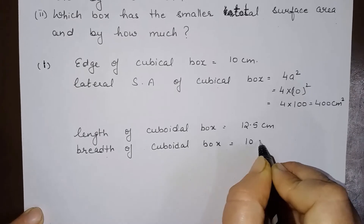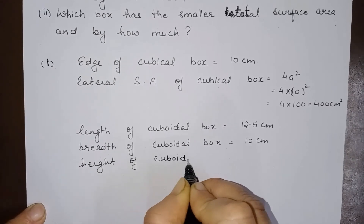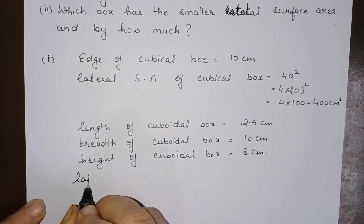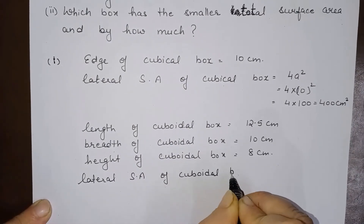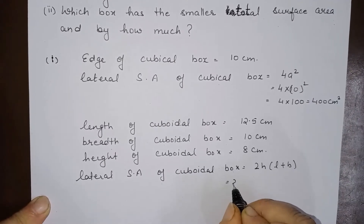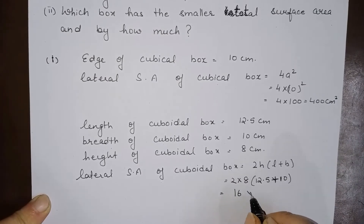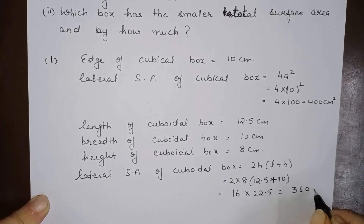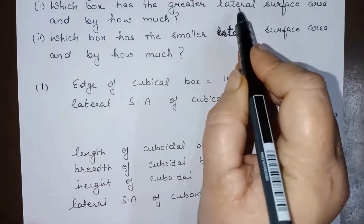The breadth of the cuboidal box is 10 centimeter, and the height is 8 centimeter. The lateral surface area of the cuboidal box is equal to 2h(l + b), so 2 into 8 into (12.5 + 10). This is 16 multiplied by 22.5, which equals 360 centimeter square.